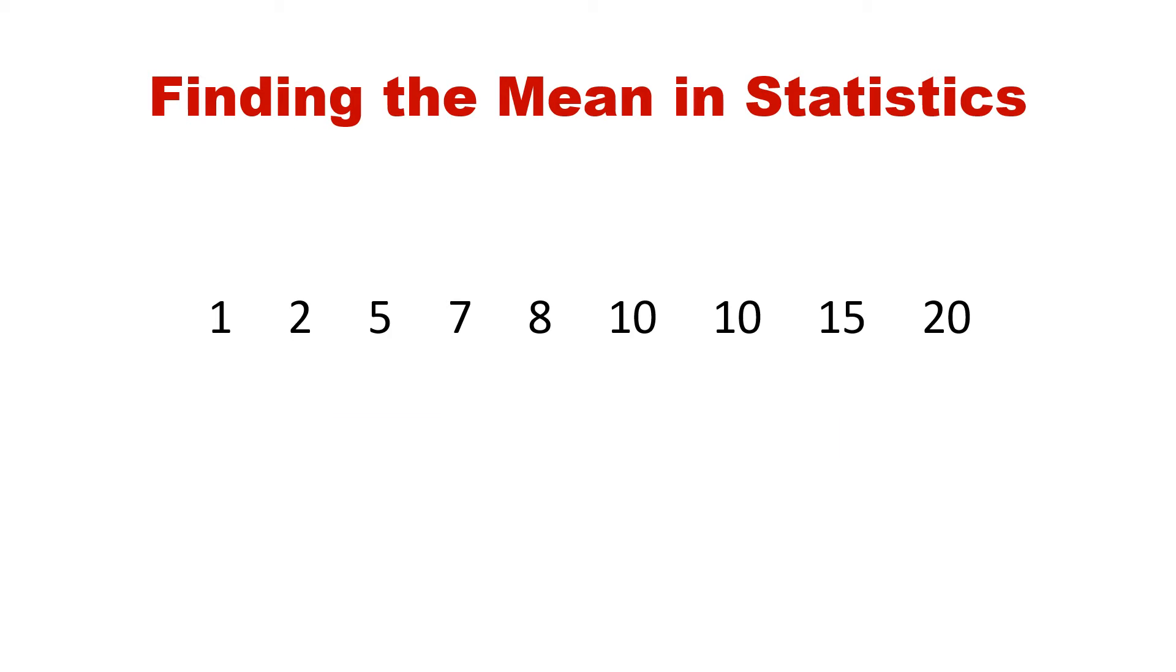With our numbers in ascending order, let's calculate n. Remember, n is the number of positions in a set. If we count our positions, we see that our number is 9.